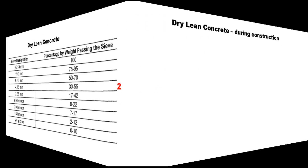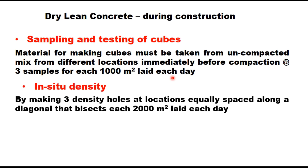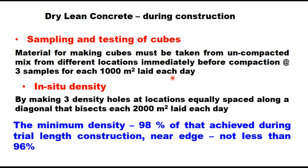For sampling and testing of cubes, material for making cubes must be taken from uncompacted mix from different locations immediately before compaction, at the rate of three samples for each 1000 square metres per day. The in-situ density is checked by making three density holes at locations equally spaced along a diagonal that bisects each 2000 square metre area per day. This density is generally determined by the sand replacement method and the minimum density to be obtained is 98% of that achieved during trial length construction.